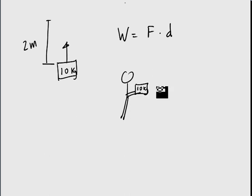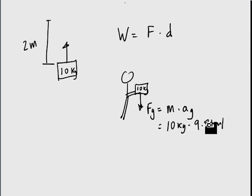To hold a 10 kilogram mass, let's think about the forces on that mass. So we know that there's going to be a force of gravity, and that's going to be equal to mass times acceleration due to gravity, which means it'll be 10 kilograms times 9.81 meters per second squared, which means there will be a downward force from gravity of 98.1 Newtons.